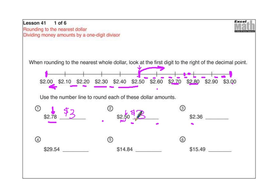Number three: two dollars and thirty-six cents. Here's two-thirty, here's two-forty, and two thirty-five would be right in the middle. Two thirty-six is just after two thirty-five, but you can see that's closer to two dollars than it is to three dollars. So we're going to say this rounds to two dollars.